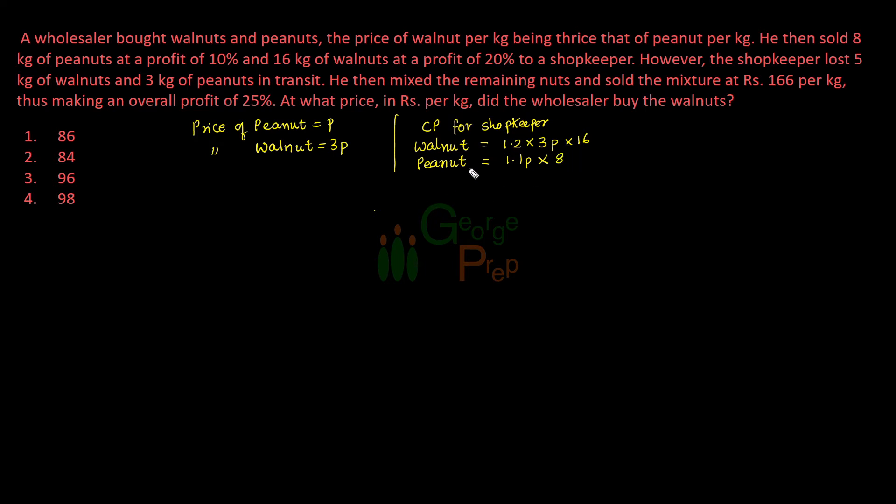This is the cost price of walnut and peanuts for shopkeeper. However, the shopkeeper lost 5 kg of walnuts, so he bought 16 kg of walnuts but now he has lost 5 kg. So remaining walnuts with him is 16 minus 5, that is 11 kg. And he has also lost 3 kg of peanuts in transit, so remaining peanuts will be 8 minus 3, that is 5 kg with him.